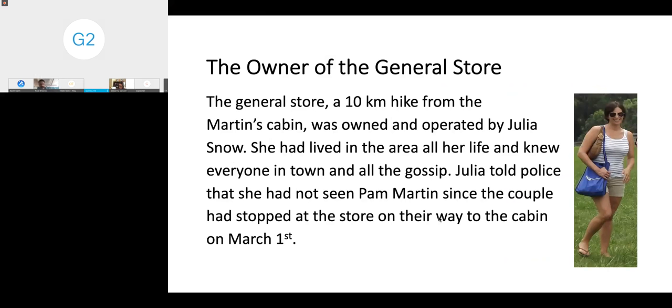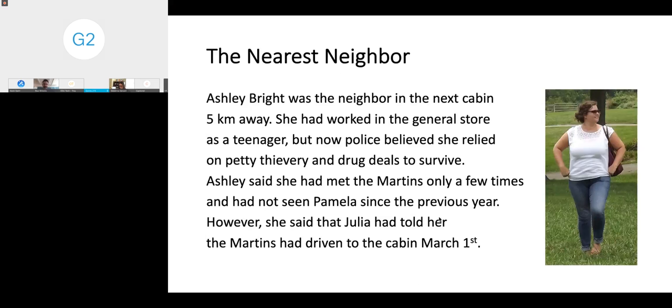The husband, John, was kind of a deadbeat. All his life, he had had low-paying jobs, primarily in sales. When the police investigated, they found that he had taken out a $500,000 life insurance policy on Pamela only three months earlier. So he became the prime suspect in the case. The owner of the general store was Julia Snow. She had lived in the area all her life and knew everyone. She said that Pam and John had stopped at her store on March 1st on the way up to the cabin, but she hadn't seen them since then.